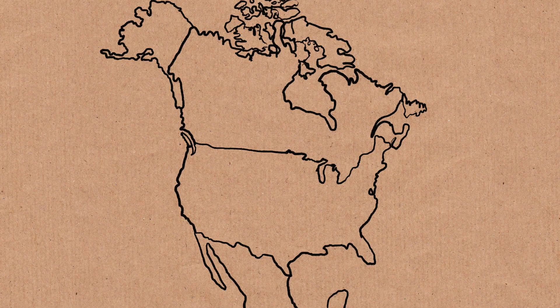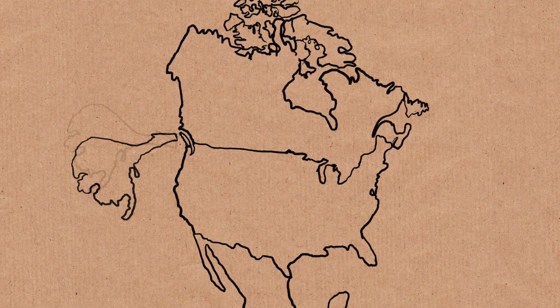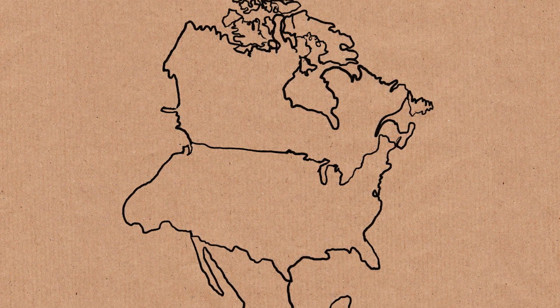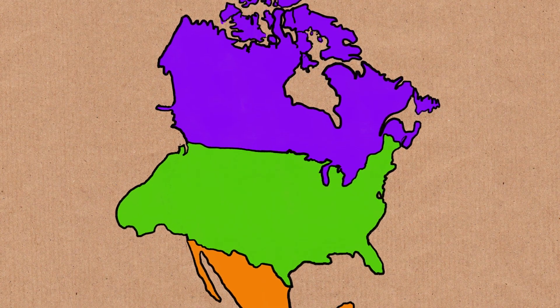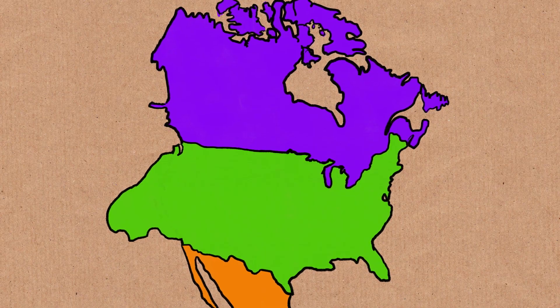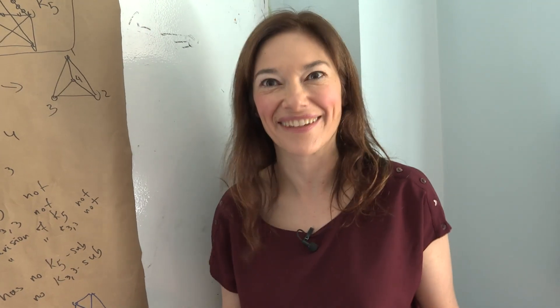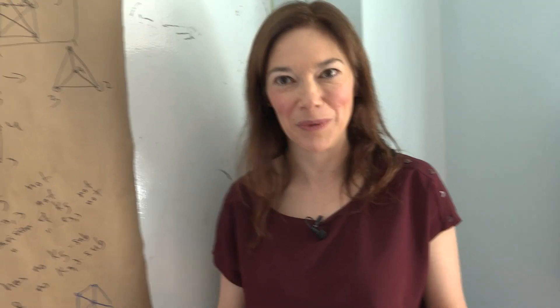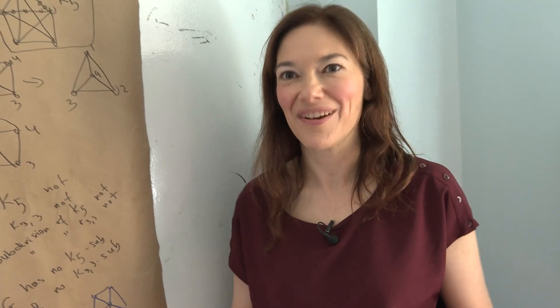For all of this to be true, you need some slightly technical assumptions. Like in this map, you can't have Alaska. The countries have to be contiguous, or as in maths we say, connected. Because it's very easy to construct a map where each country is a hundred islands, and you need a hundred colors to color it. But that's not what we mean. What we mean is all countries are connected.